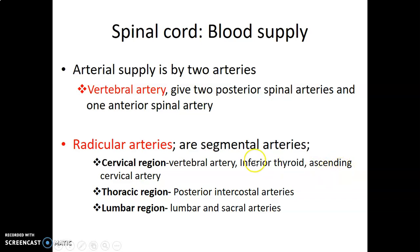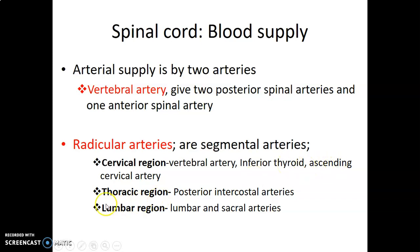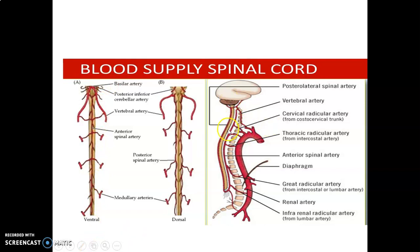The cervical portion of the spinal cord receives blood supply from the vertebral artery, the inferior thyroid artery (from the thyrocervical trunk of the first part of subclavian), and the ascending cervical artery also from the subclavian artery. The thoracic region is supplied by posterior intercostal arteries from the thoracic aorta, while the lumbar region of the spinal cord is supplied by lumbar and sacral arteries from the abdominal aorta. You can appreciate the radicular branches: cervical from the costocervical trunk, thoracic from the intercostals, and lumbar from lumbar vessels.